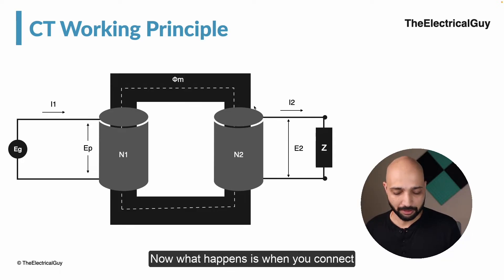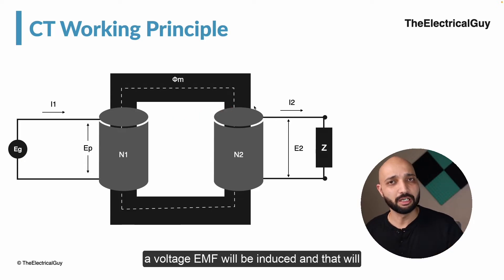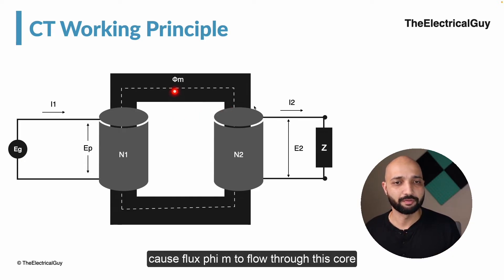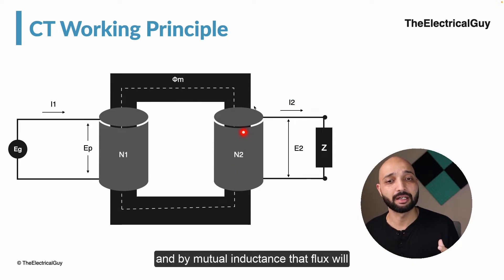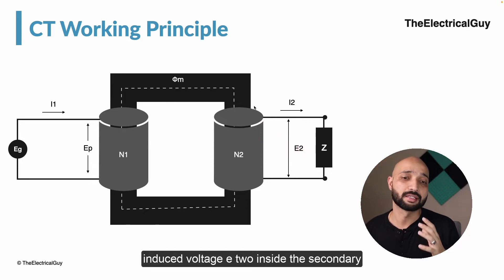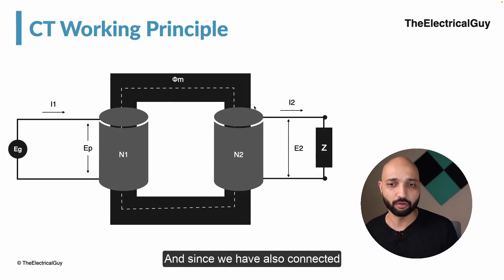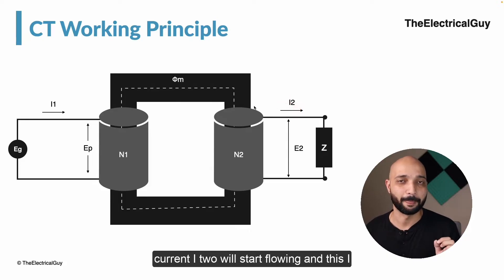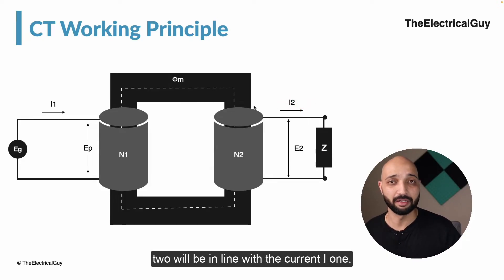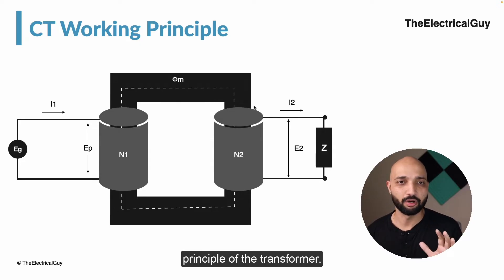Now, when you connect the supply to the primary side, a voltage EMF will be induced and that will cause flux phi M to flow through the core. By mutual inductance, that flux will induce voltage E2 inside the secondary of the transformer. And since we have also connected a load, current I2 will start flowing, and this I2 will be in line with the current I1. So that is the basic and very simple working principle of the transformer.